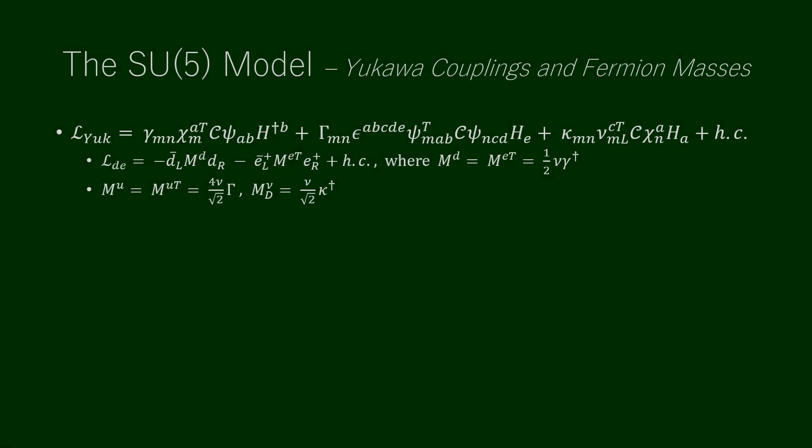The Yukawa couplings are written, where M and N are family indices, capital gamma is symmetric, and epsilon is anti-symmetric. The fermion masses are generated from H. The SU(5) symmetry predicts that the D-quark and charged lepton mass matrices are the same up to a transpose because they derive from the same coupling. The second and third terms lead to the U-quark and Dirac neutrino mass matrices.